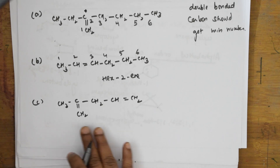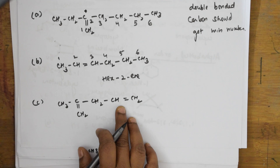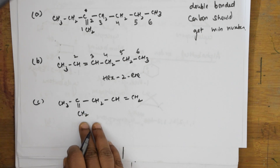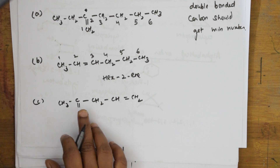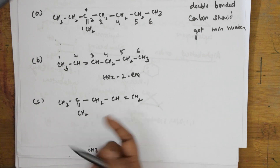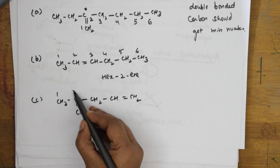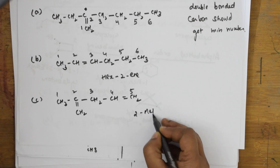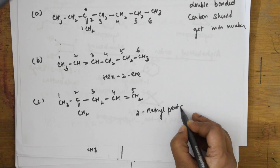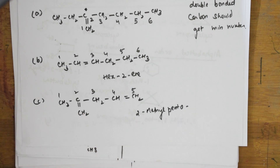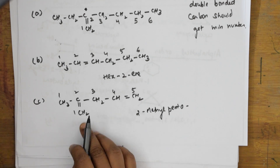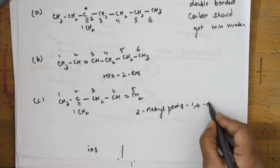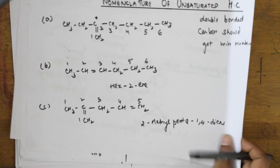When there are two double bonds and also a substituent, preference is given to the carbon that has both a substituent and a double bond. Numbering goes one, two, three, four, five. There is a methyl substituent, and double bonds are at positions one and four, so this is named pent-1,4-diene with a methyl group.